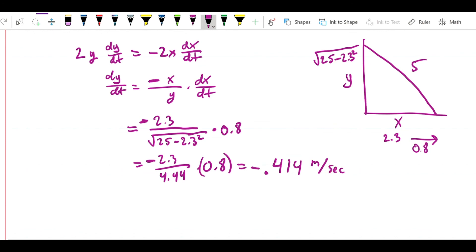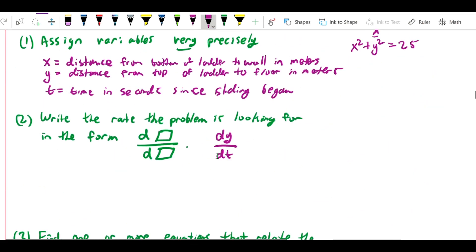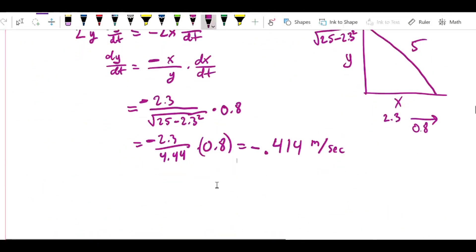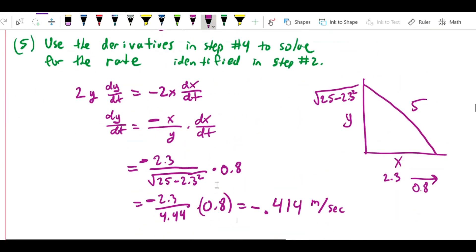If I've done everything right, this is equal to negative 0.414 meters per second. I think we're measuring in seconds, correct? Yes, we are. So negative 0.414 meters per second. There we go. That's the answer. That's how fast the ladder is sliding down the wall.